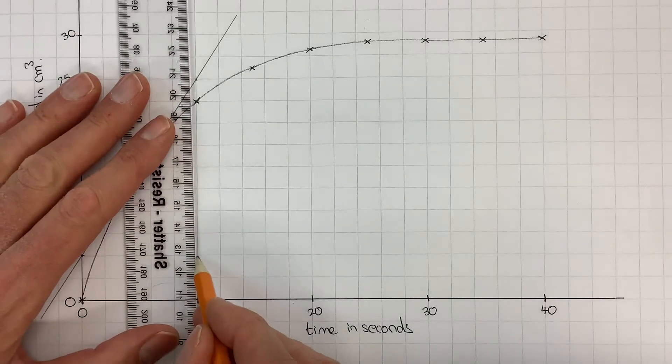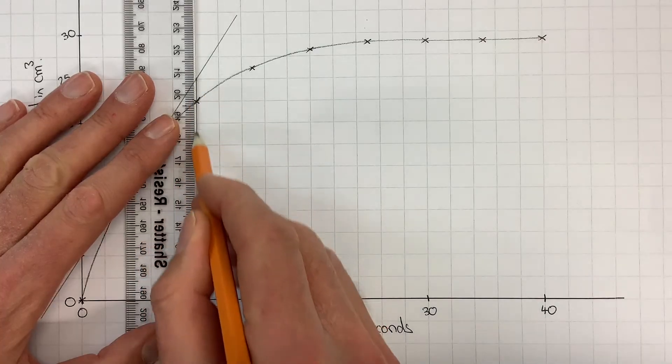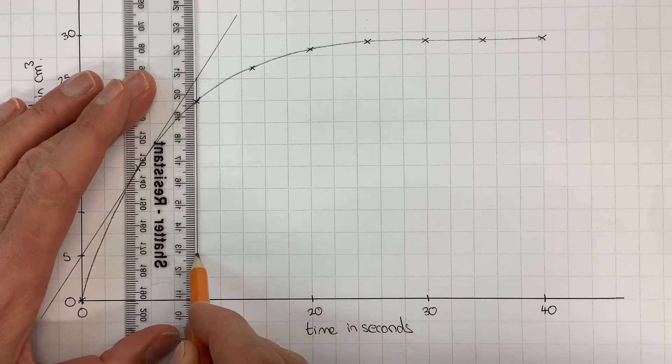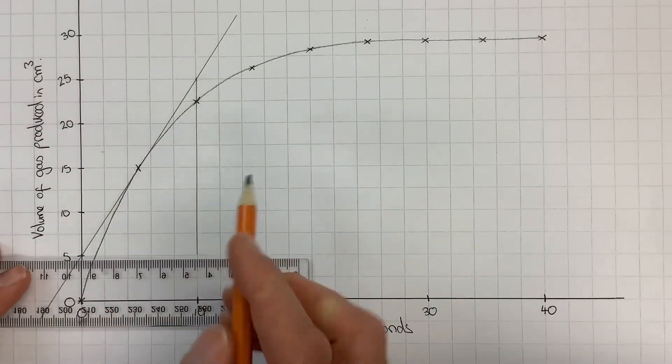I could in reality choose any points that I like to draw my triangle, but you need to make sure that the triangle is big or you won't get a very accurate gradient.